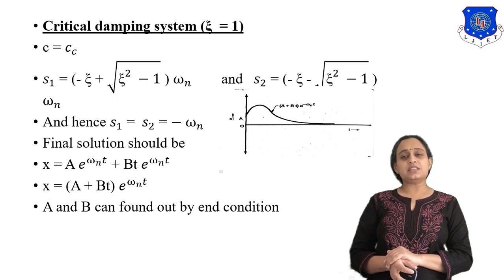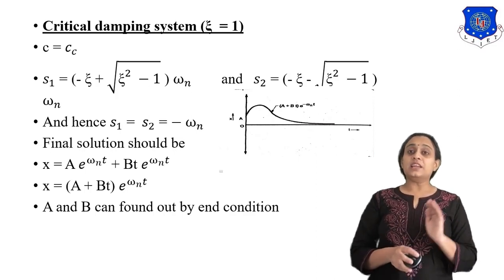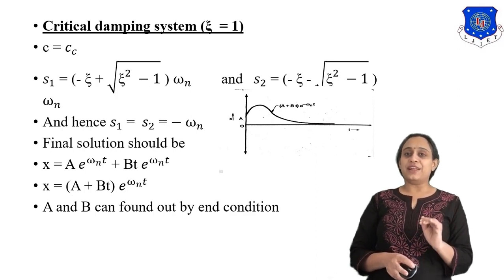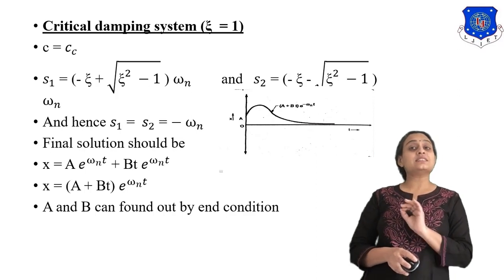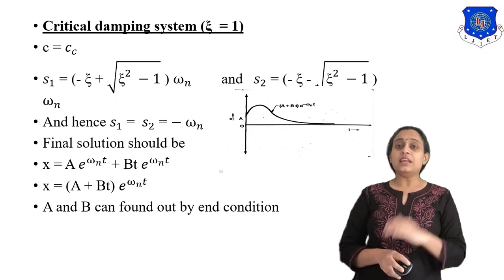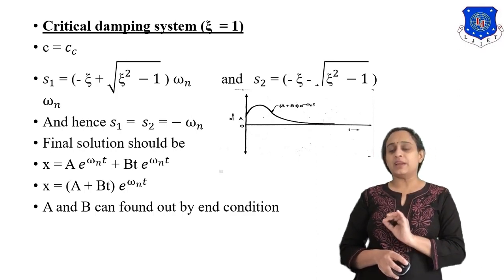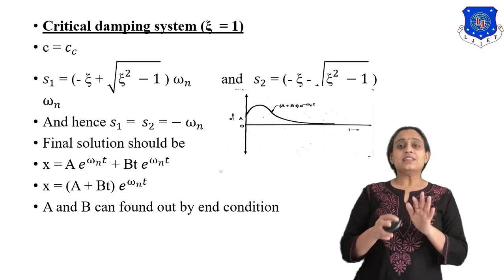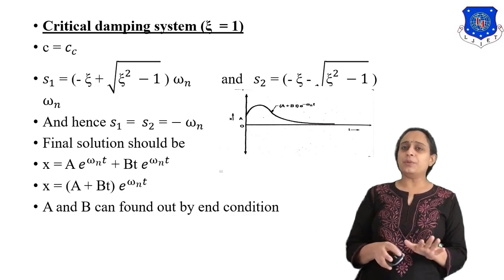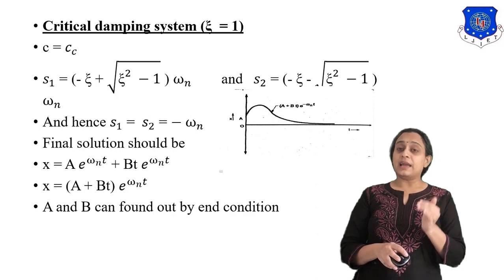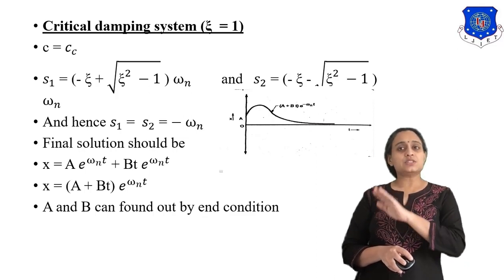Now let us look at the second system, the critically damped system, where zeta equals one, meaning c equals cc. In this case, putting zeta equal to one into the equations gives s1 equal to s2 equal to minus omega_n — both roots are the same. According to the mathematical formula for equal roots, the displacement is x equals (A plus B·t)·e^(−omega_n·t).